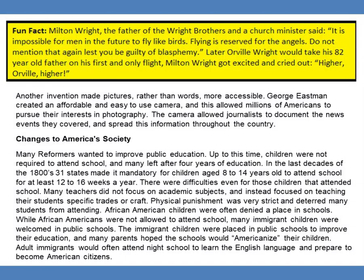Changes to America's Society. Many reformers wanted to improve public education. Up to this time, children were not required to attend school, and many left after four years of education. In the last decades of the 1800s, 31 states made it mandatory for children aged 8 to 14 years old to attend school for at least 12 to 16 weeks a year. Many teachers did not focus on academic subjects, instead focusing on teaching specific trades or crafts. Physical punishment was very strict and deterred many students from attending. African-American children were often denied a place in schools, while many immigrant children were welcomed in public schools to improve their education, with many parents hoping schools would Americanize their children.